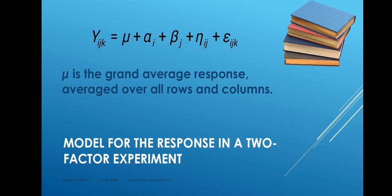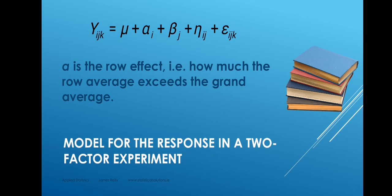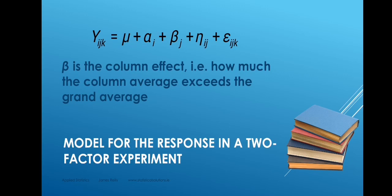The model for a two-factor experiment takes this into account. In general, y is the response in a two-factor experiment, and y equals mu — the grand average response, which is the grand average of all the numbers in the table averaged over all rows and columns — plus alpha, the row effect, which is how much the average in a particular row exceeds the grand average, i.e., how much the average response when factor one is set at a particular level exceeds the grand average. Beta is how much the average in a particular column exceeds the grand average — how much a particular level of factor two exceeds the grand average.